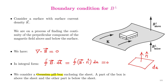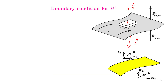In this figure, a Gaussian pillbox enclosing the sheet is shown. A part of the box is above the sheet and the other part is below the sheet. This box will have a finite area at its top and bottom faces, but its height or thickness along the sides would be negligibly small. In evaluating the surface integral, we will choose the unit vectors as perpendicular to each of the faces of the Gaussian pillbox.